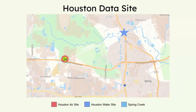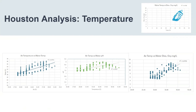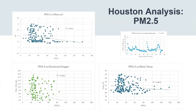Here's an overview of the Houston data site. The water quality tracking and air quality tracking are roughly 2.8 miles away. Looking at the correlation between temperature and water quality traits, there is a positive correlation. Interestingly, the correlation between air temperature and dissolved oxygen content in the water is stronger than between water temperature and dissolved oxygen in the water. Looking at the correlation between PM2.5 and water quality in Houston, there doesn't seem to be a significant correlation.